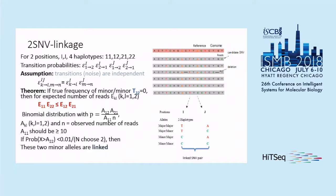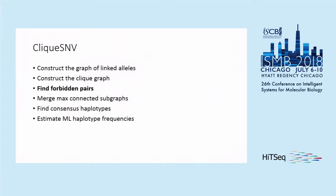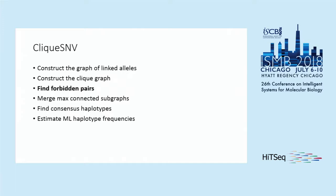The 2SNV method used clustering, which was quite slow. But it was a success — we were able to identify haplotypes correctly. The error rate of PacBio reads is sometimes up to 15%, but in our case it was around 2–3%. Despite that, we were able to correctly identify haplotypes with a frequency as low as 0.2%.